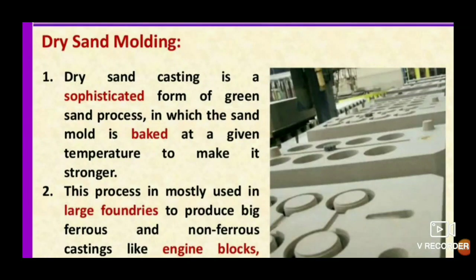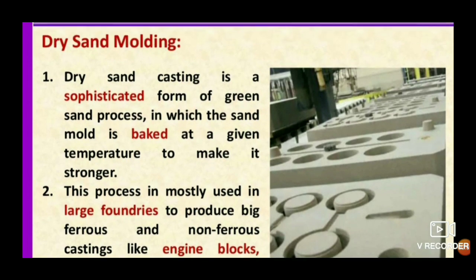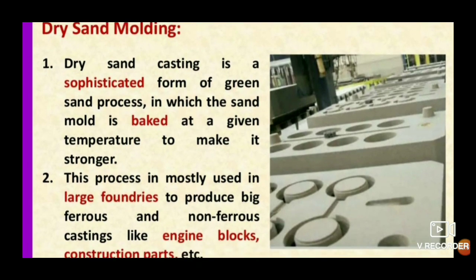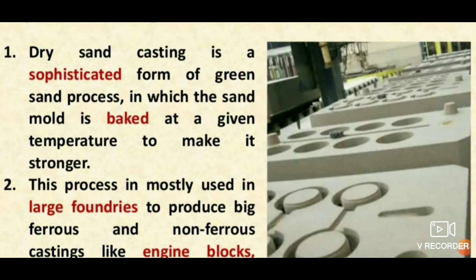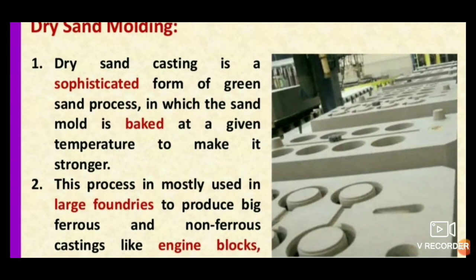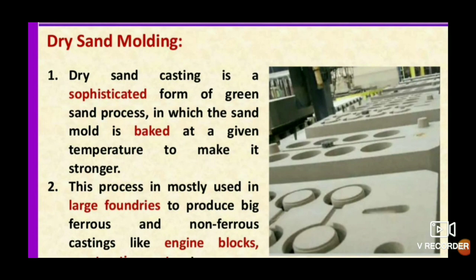Welcome to Engineering Study Materials. Today we are going to discuss dry sand molding. Dry sand molding is one form of green sand molding. In green sand molding, moist sand is packed in the cope and drag and rammed to make a complete mold, after which molten metal is poured into it.